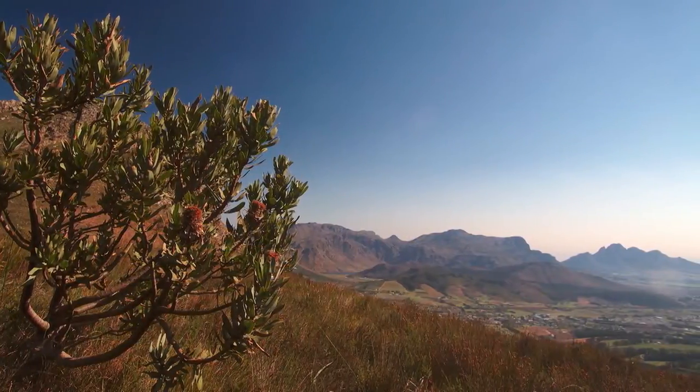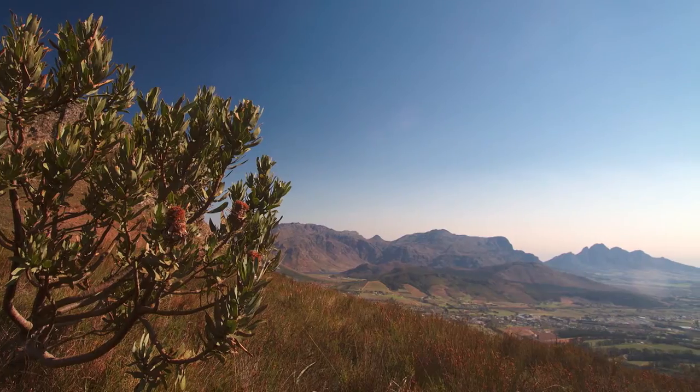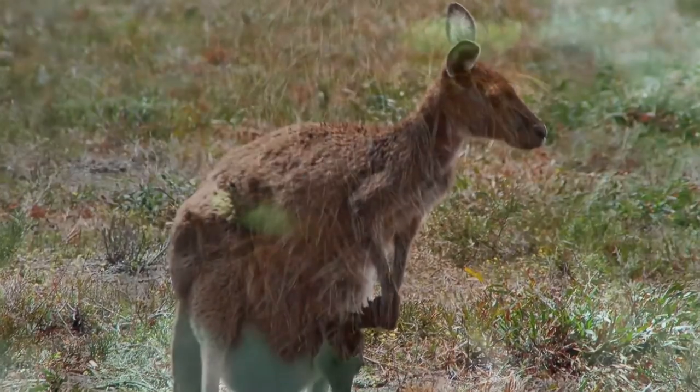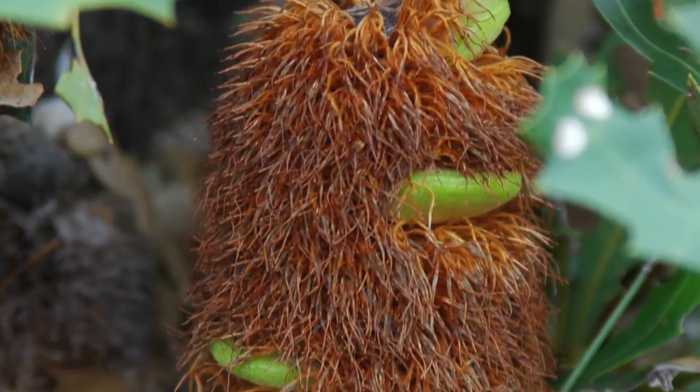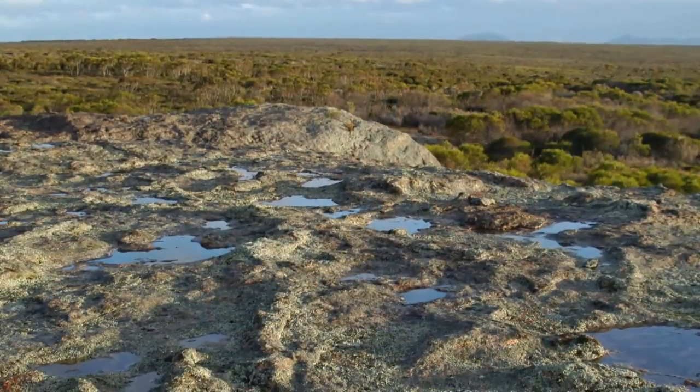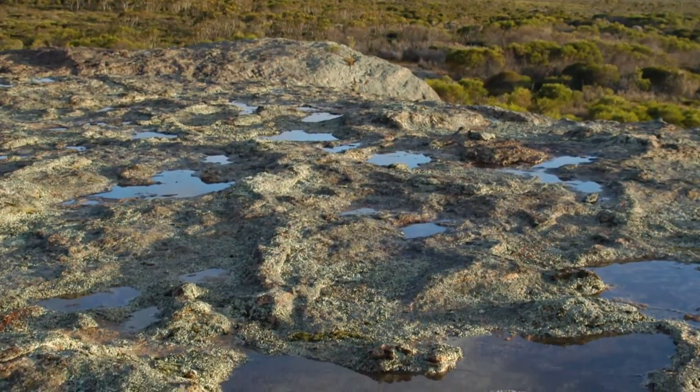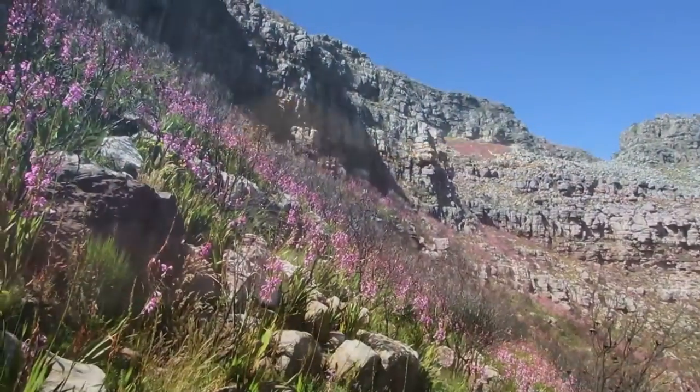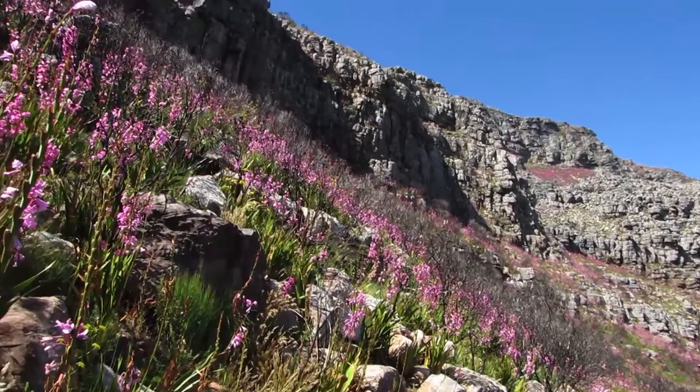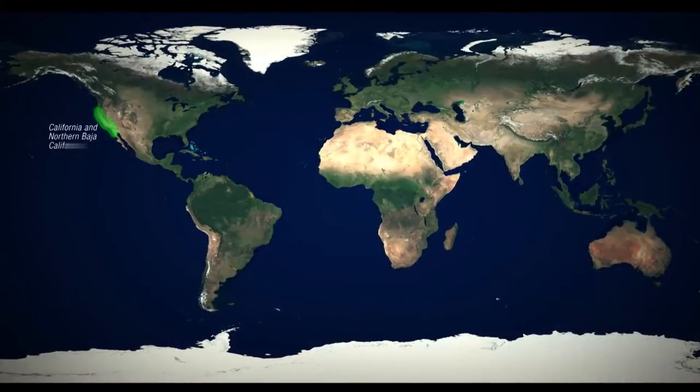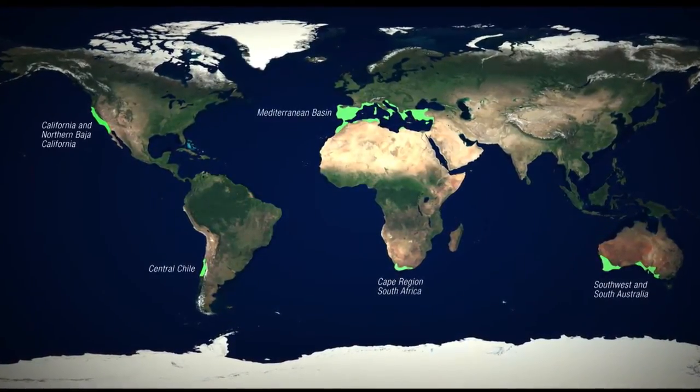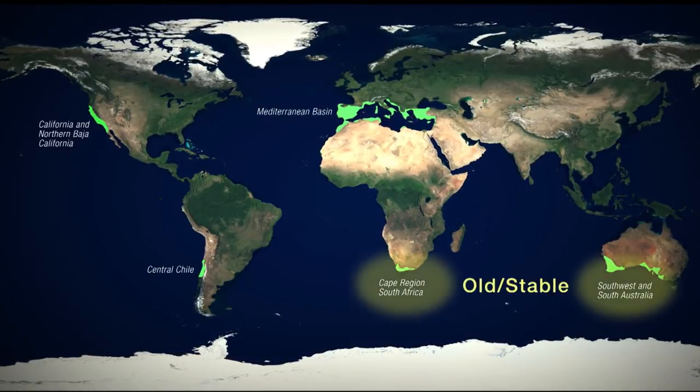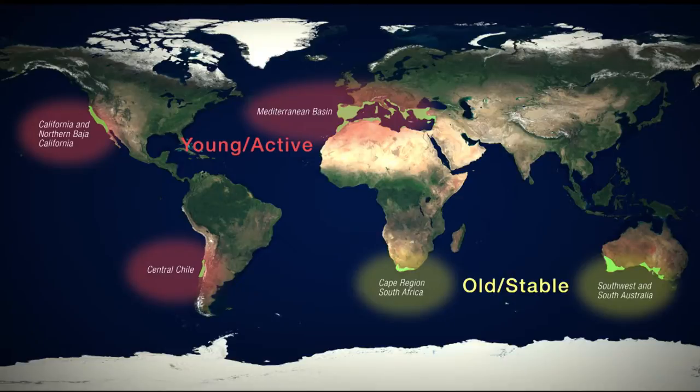The world's Mediterranean climate ecosystems are among the most biologically diverse regions on Earth. Geological history has had a powerful influence on the evolution of each region's native species. The geology of the five Mediterranean climate regions can be differentiated into two types, old and stable, and young and active.